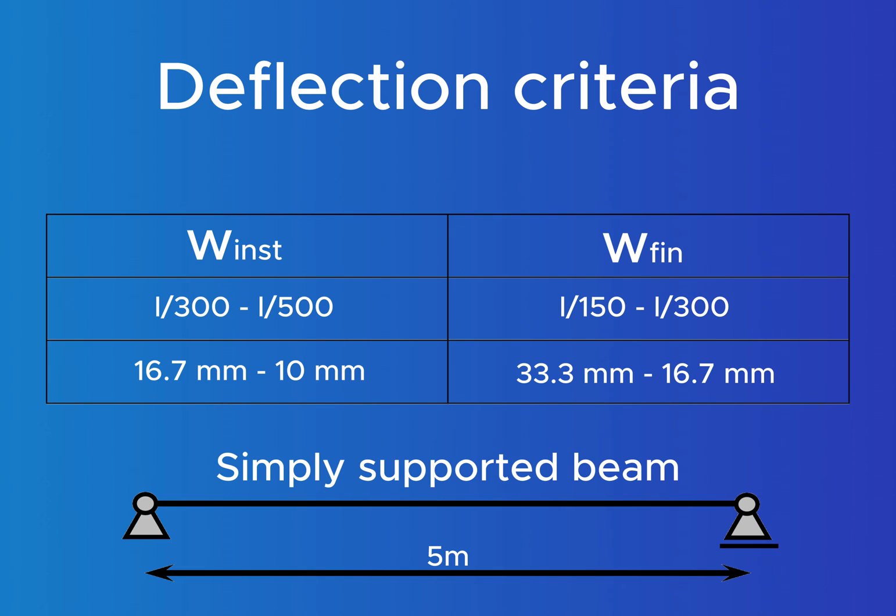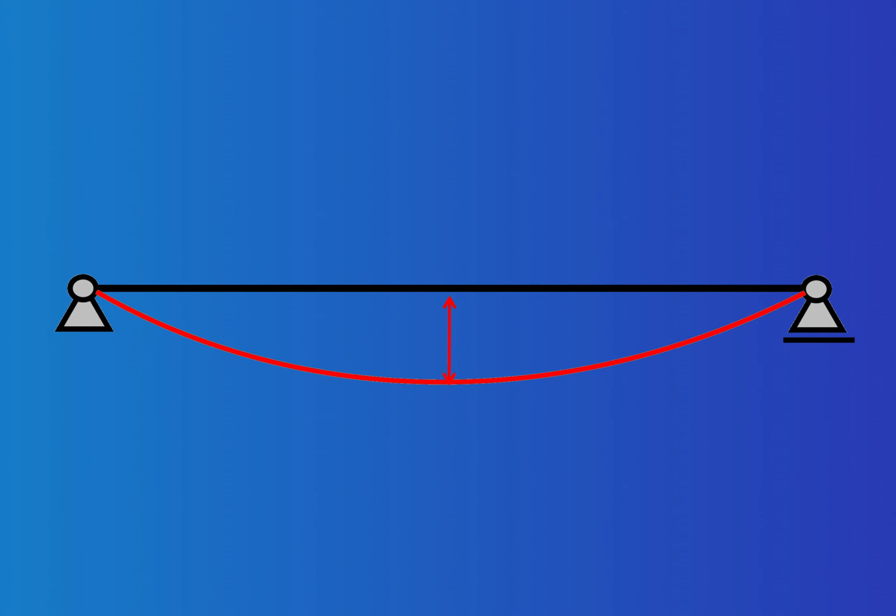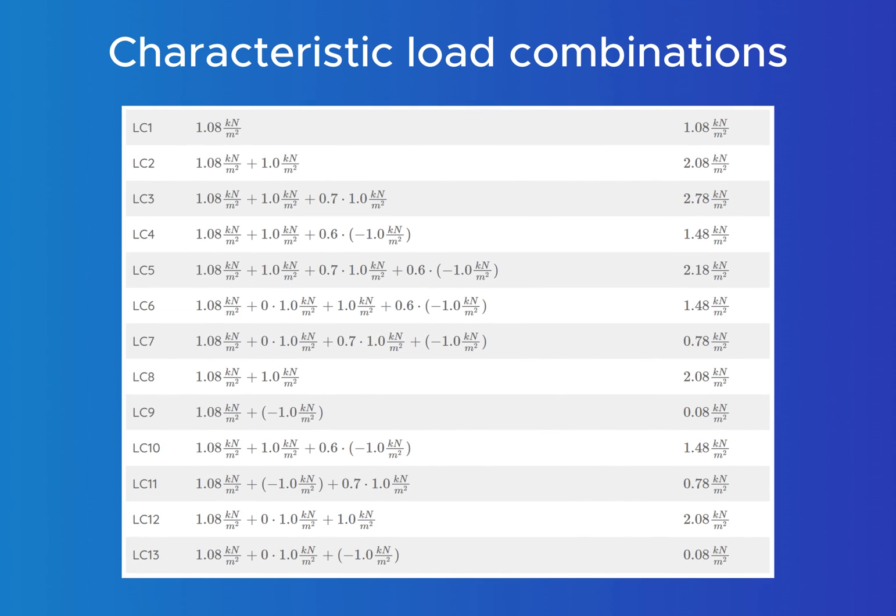All right, now let's have a look at how to calculate the deformation. The instantaneous deformation of our beam is calculated with the load of the characteristic load combination. Looking at all load combinations, we can see that LC3 leads to the biggest load where the live load is the leading and the snow load the accompanying variable action.